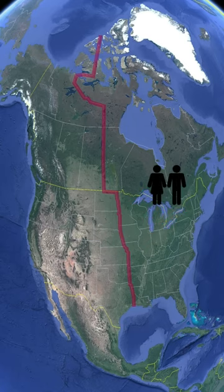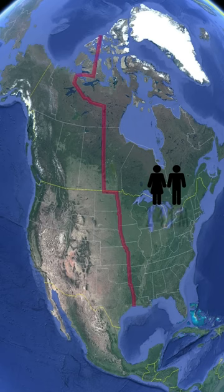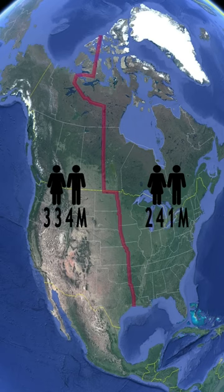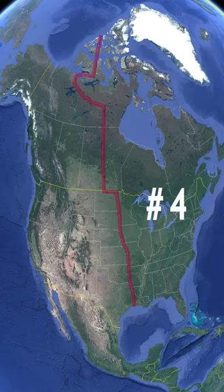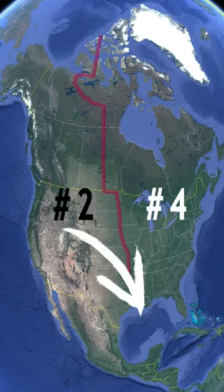Canada's population would greatly increase from 38 to 241 million, while America's would decline from 334 to 131 million. Canada loses some of its size and becomes the fourth largest country, whereas America gains size and becomes the second largest country on earth.